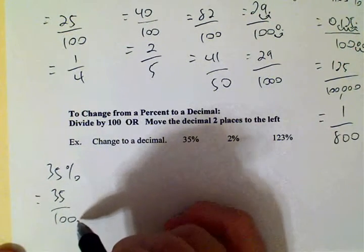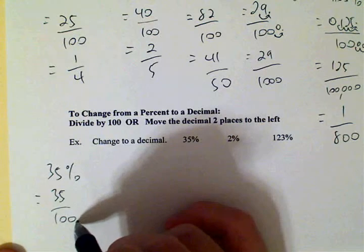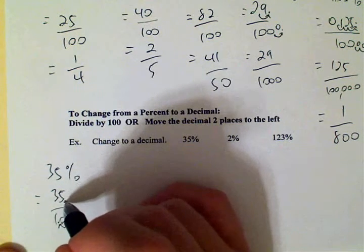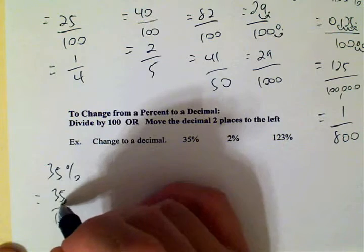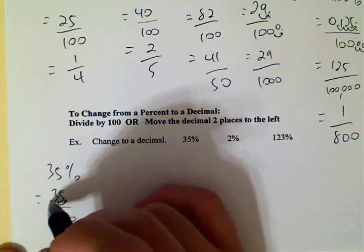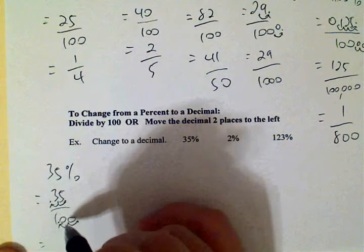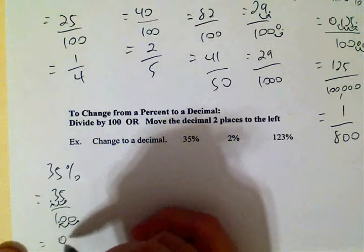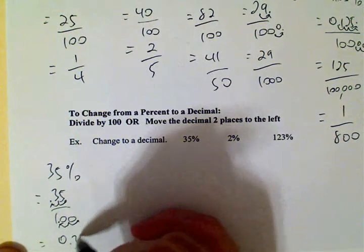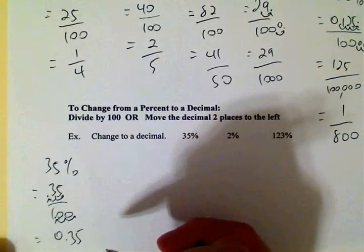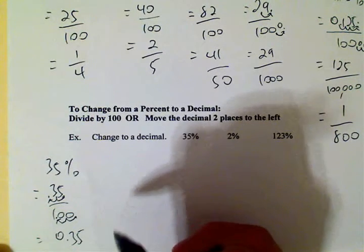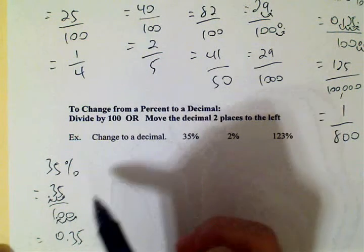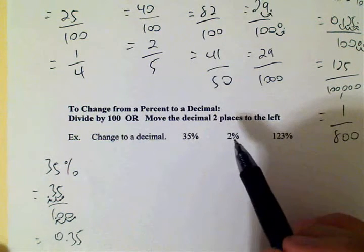So let's take this decimal and move it until we have a one — that's two places left. Let's take this decimal and move it the same way, two places left. And point thirty-five divided by one — anything divided by one is that same number. We get zero point thirty-five. The moral of the story is: to convert a percent to a decimal, you move it two places to the left.